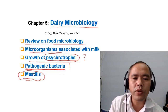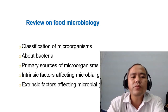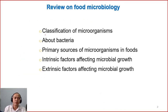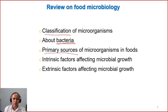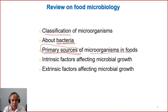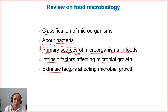Now we go to the first part — the review. In this review we will look again at the classification of microorganisms, the main important groups relevant to food. We review basic information about bacteria, and then we will discuss what are the primary sources of microorganisms that contaminate food. Knowing where they come from means we can somehow prevent them from contaminating food. It's also important to discuss the intrinsic factors and extrinsic factors which influence microbial growth.